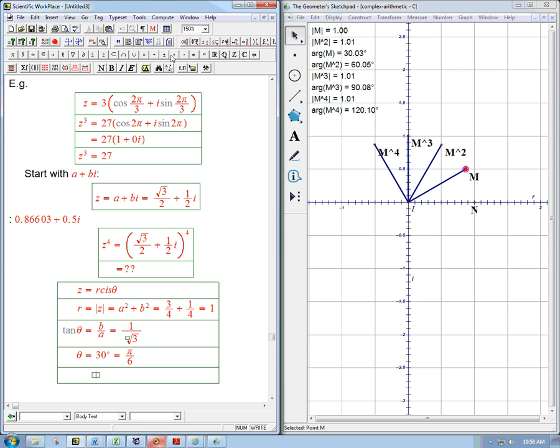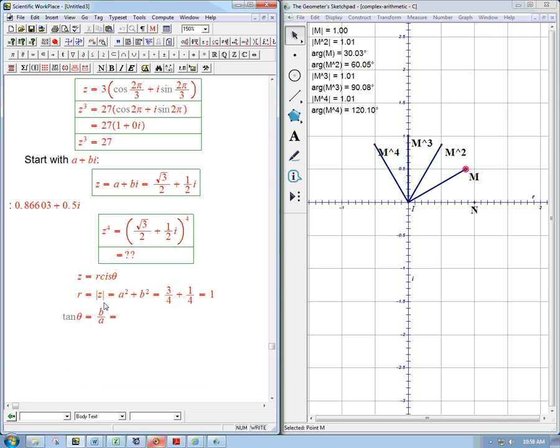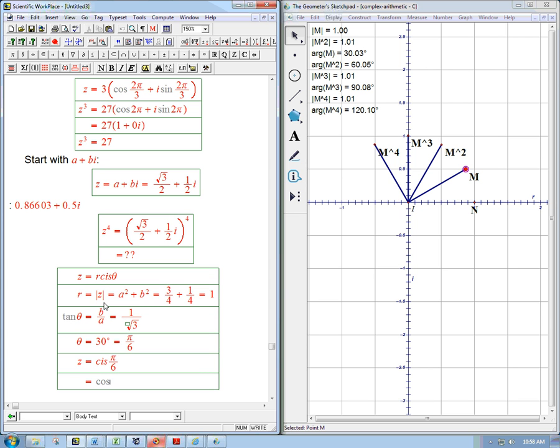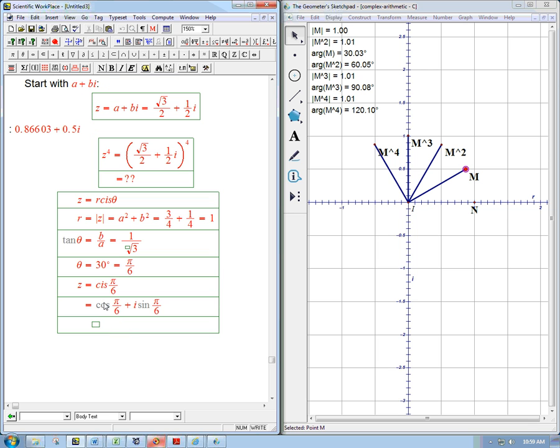So now we're ready to write z. Z is just 1 for the magnitude times cis of pi over 6. I'll use radians. It's fancier. Or in other words, remember that's just an abbreviation for it. It's cosine pi over 6 plus i sine pi over 6. So that's z.